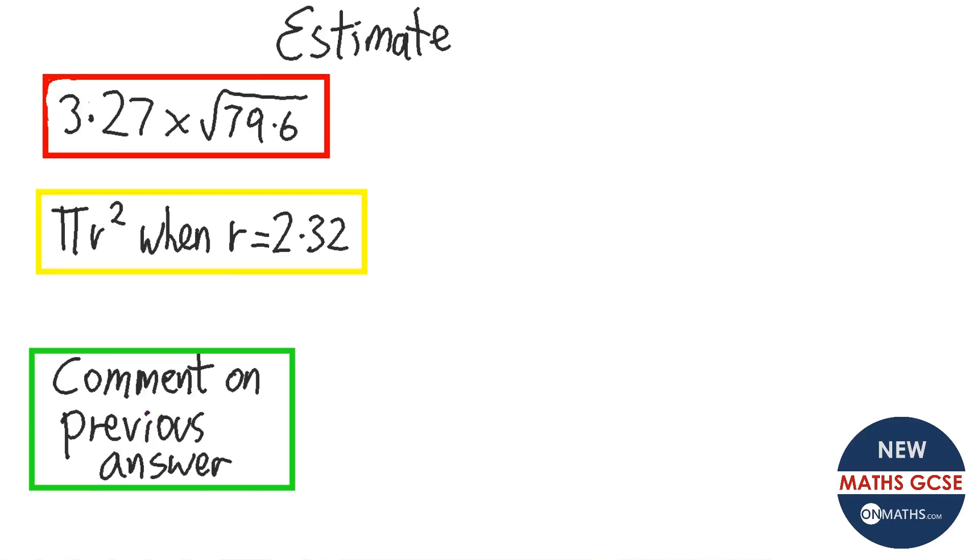Okay, so a few more questions to go. And these are kind of exceptions and different kind of questions on estimation. So this first one looks quite easy because we know we round that 3 and round that 7. So it's going to be 3 times square root. But if we round that to 80, we don't know what the square root of 80 is. And the whole point of estimation is we should be able to do it quickly without a calculator. So I don't know what square root of 80 is, but I do know what the square root of 81 is. So we estimate it to be 81 instead. So it becomes 3 times 9, which is the square root of 81, which is 27.